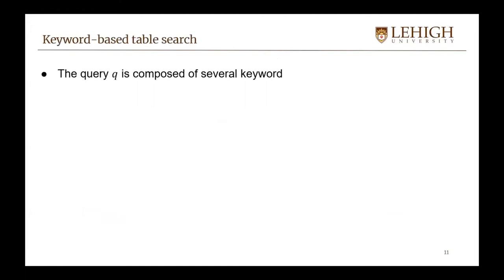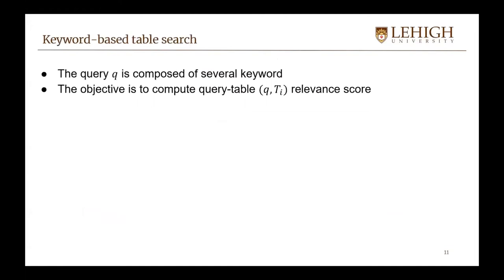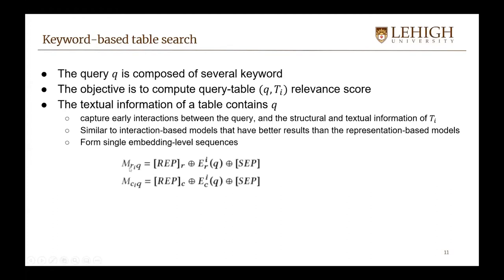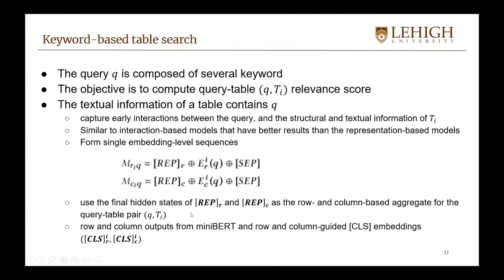For keyword-based table search, the query is composed of several keywords and the objective is to compute the query-table relevance score. We include the query in the textual information to capture early interactions between the query and the structural and textual information of the table, similar to the interaction-based model, which generally achieves better results than representation-based models for document retrieval. We form a single embedding-level sequence for both row and column representations, where both the row embedding and column embedding are a function of the query, using the hidden states from RAPR and RAPC as the row and column-based aggregates for the query-table pair.